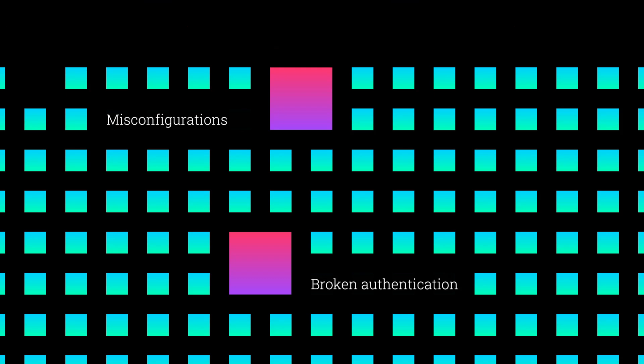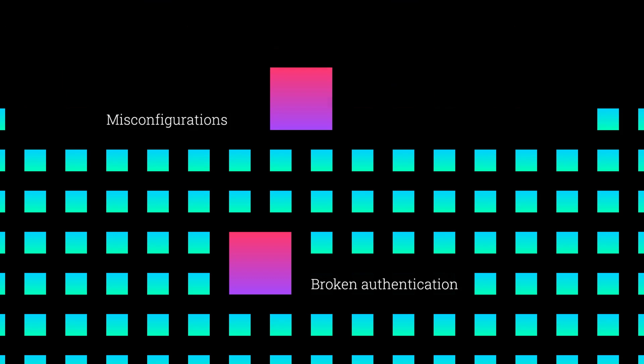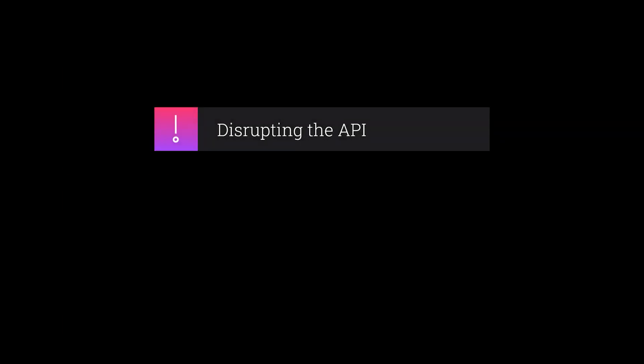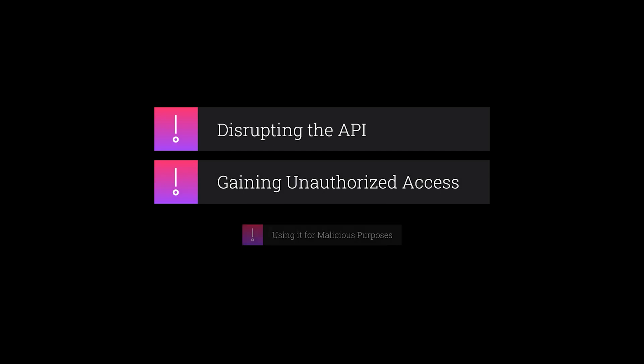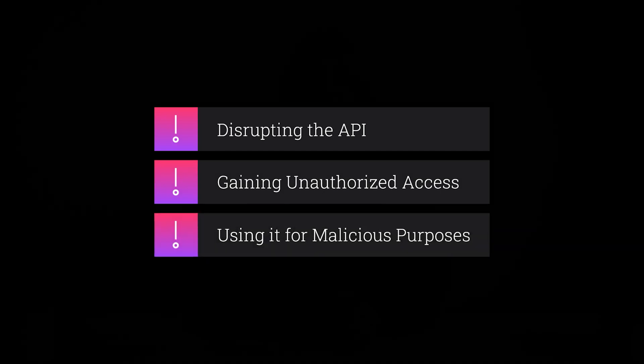API abuse occurs when developers manipulate APIs to perform actions they were not intended for. This can involve disrupting the API, gaining unauthorized access, or using it for malicious purposes.